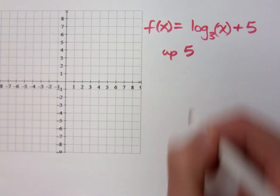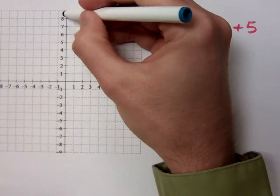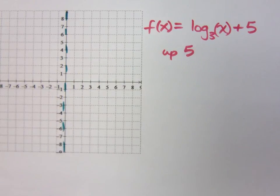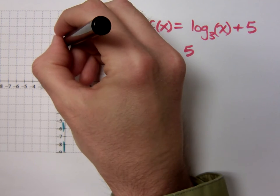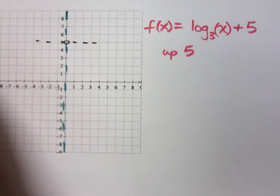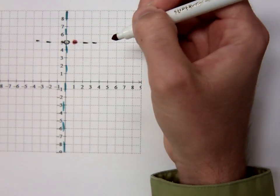Up 5. So where is my vertical asymptote? x equals 0. I'm up 5, so that means my new origin, so to speak, is up here. What's the point that I know for certain on this graph? 1, 0. This 1, 0 based from that new origin, right?